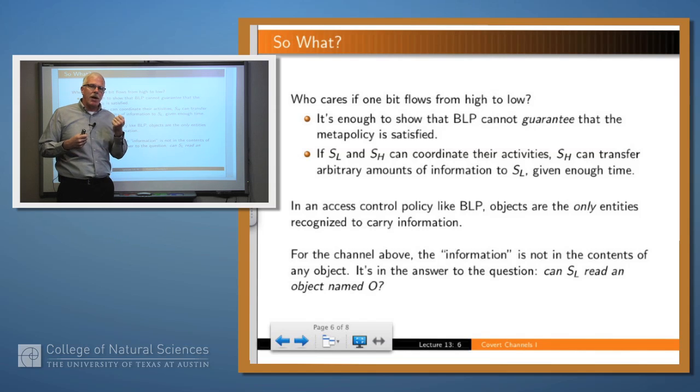So what was going on here? The Bell and LaPadula system, as any access control system, has a very limited notion of how information flows within the system. In particular, according to Bell and LaPadula's view, information flows when you write a value into an object, and then another subject reads it. But that's not what's happening here. We passed a bit of information, but it wasn't the contents of any object that was in question. In fact, the contents of the object were the same on both sides. What was happening was that there was some system attribute being manipulated, and in particular, it was the level of the object named F0. That bit of information was really residing in the question, can SL read a particular object named O?